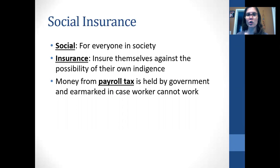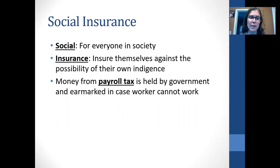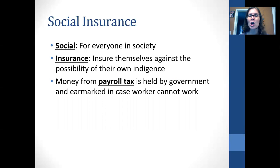With insurance, you're insuring yourself against the possibility that you would not be able to work. Social insurance programs are meant to assist individuals who aren't able to work — so if there's a loss of a job, death of the family breadwinner, or a physical disability, you would receive compensation. The funding comes from the payroll tax, which we've talked about previously. A certain percentage comes out of your paycheck each week and is held by the government, and if something were to happen to you, you would receive assistance.